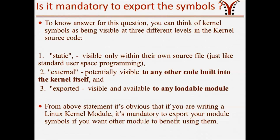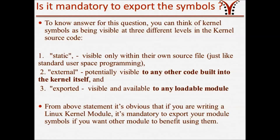Our second topic is: is it mandatory to export the symbols? To answer this question, you can think of kernel symbols as being visible at three different levels in the kernel source code. The first one being static — if you define a symbol with static scope, this symbol is visible only within its own source file, just like standard user space programming. If you declare it as an external symbol, then it is potentially visible to any other code built into the kernel itself. If you declare it as an exported symbol, then it is visible and available to any loadable module. From the above statement it is obvious that if you are writing a Linux kernel module, it is mandatory to export your module symbol if you want other modules to benefit from using them.